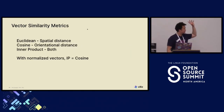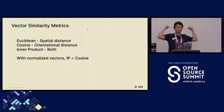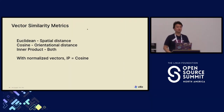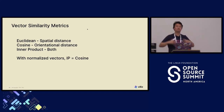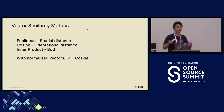To recap: Euclidean distance is used if you want the magnitude — the spatial distance between two vectors. Cosine is if you want the difference in orientation. Inner product gives you a combination of both. And if you are working with normalized vectors, use inner product over cosine.